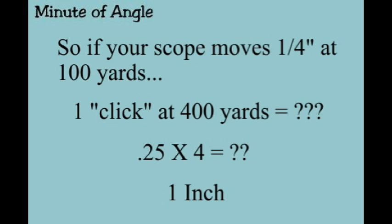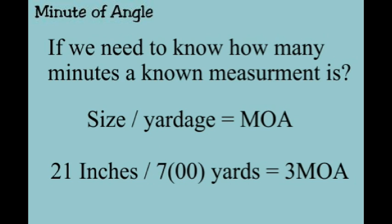So if we need to know how many minutes a known measurement is at a distance, you can do that math too. You take the known size of a target - different animals are different sizes. If you're shooting at a deer, the average whitetail is 32 to 36 inches tall. I should have used 32 inches, but for the math I put on the equation, let's say your average deer is 21 inches tall, and you knew that. You're looking at it, you're about to take a 700 yard shot, and you need to know how many minutes to put on your scope. Well, 21 inches at 700 yards is three minutes of angle, because 21 divided by 7 is 3.